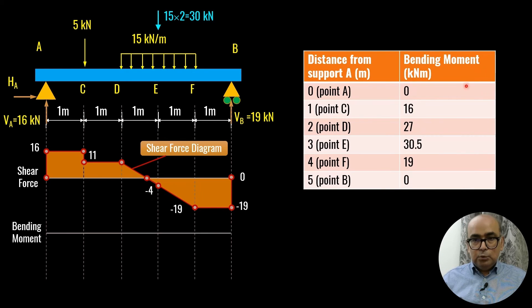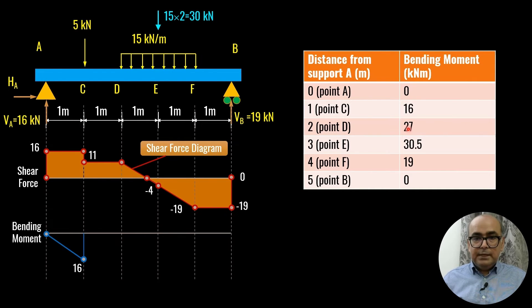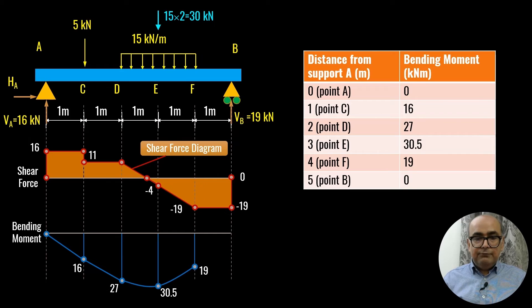Now we plot the bending moment diagram using the calculated values: 0 at A, 16 at C, 27 at D, 30.5 at E, 19 at F, and 0 at B.